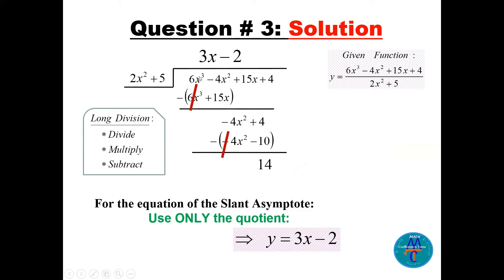We divide 6x^3 - 4x^2 + 15x + 4 by 2x^2 + 5. The highest power term 6x^3 divided by 2x^2 gives 3x. Multiplying 3x by the divisor and subtracting, we're left with -4x^2 + 4. Then -4x^2 divided by 2x^2 gives -2.